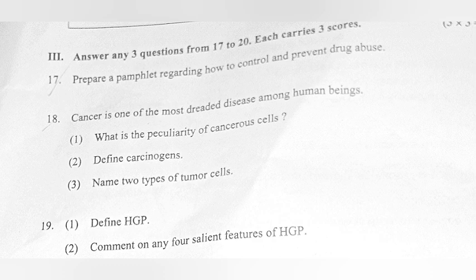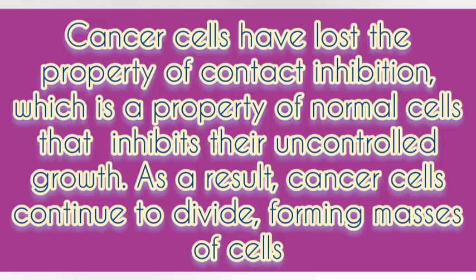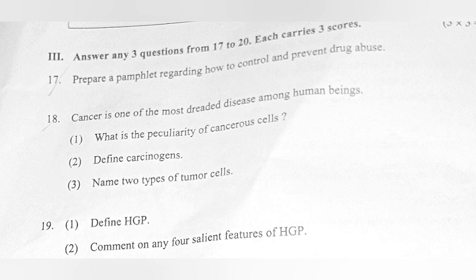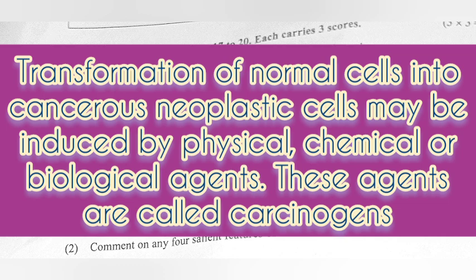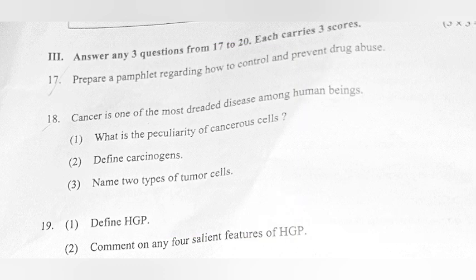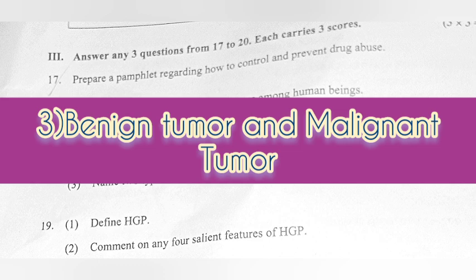Question 18. Cancer is one of the most dreaded diseases among human beings. Part 1: What is the peculiarity of cancerous cells? Answer: Cancer cells have lost the property of contact inhibition, which is a property of normal cells that inhibits their uncontrolled growth. As a result, cancer cells continue to divide, forming masses of cells. Part 2: Define carcinogens. Answer: Transformation of normal cells into cancerous or neoplastic cells may be induced by physical, chemical, or biological agents — these agents are called carcinogens. Part 3: Name two types of tumor cells. Answer: Benign tumor and malignant tumor.